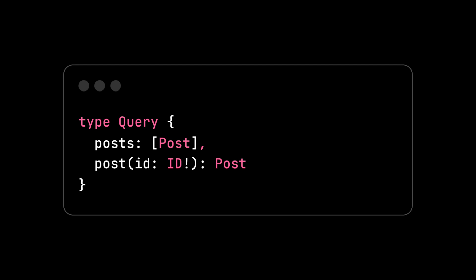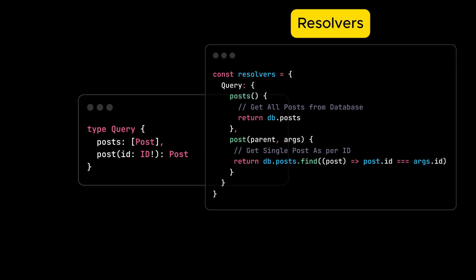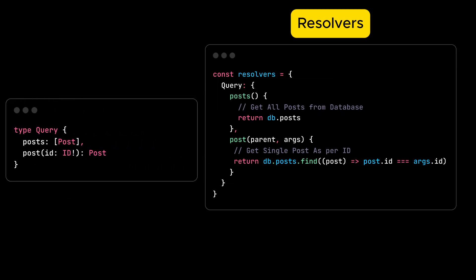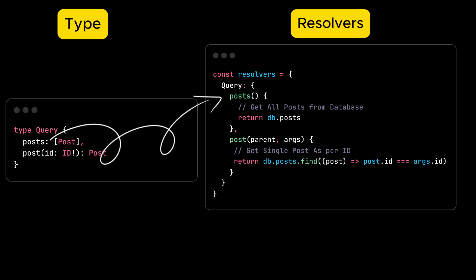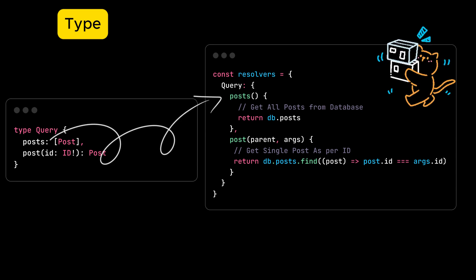In this example, we can see query has two fields: one is posts, to get all the posts, and another is to get a specific post by post ID. Then come the resolvers — they are the functions that handle how data is fetched when a specific query, mutation, or subscription is made. They act as the behind-the-scenes workers for every field defined in your schema, connecting your GraphQL queries to data sources like databases, REST APIs, or any other services.